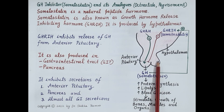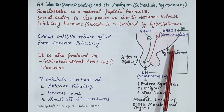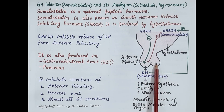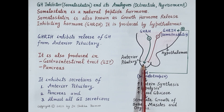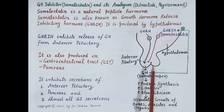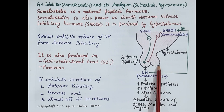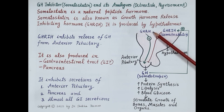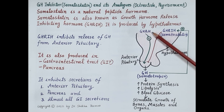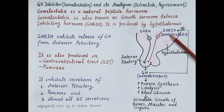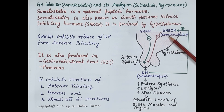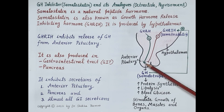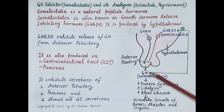Now look at this figure — this is the zoomed view of the hypothalamus. Located just below the hypothalamus is the pituitary gland. This is the anterior pituitary lobe and this is the posterior pituitary lobe. Both growth hormone releasing hormone (GHRH) and growth hormone release inhibiting hormone (GHRIH) are produced by the hypothalamus. Growth hormone releasing hormone stimulates the anterior pituitary to produce growth hormone, which is also called somatotropin.